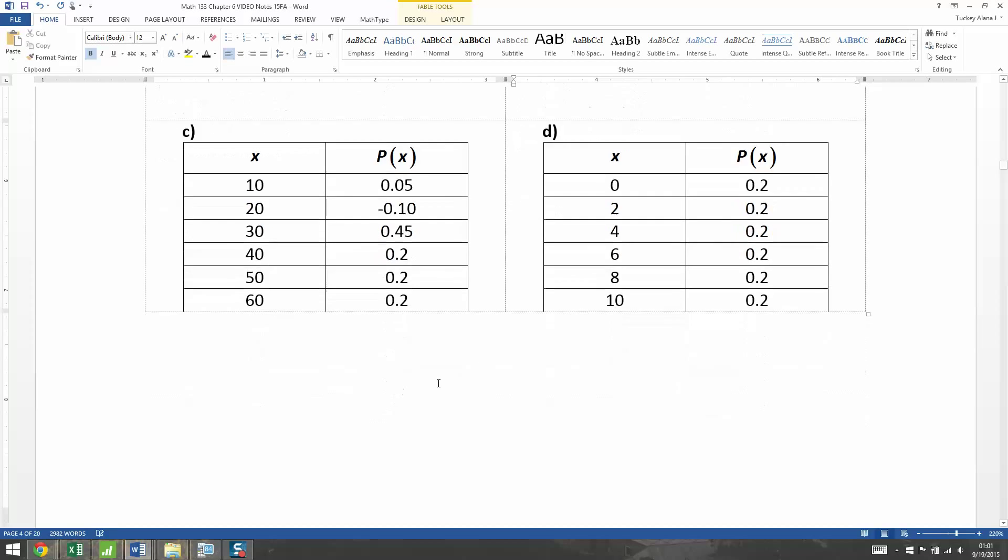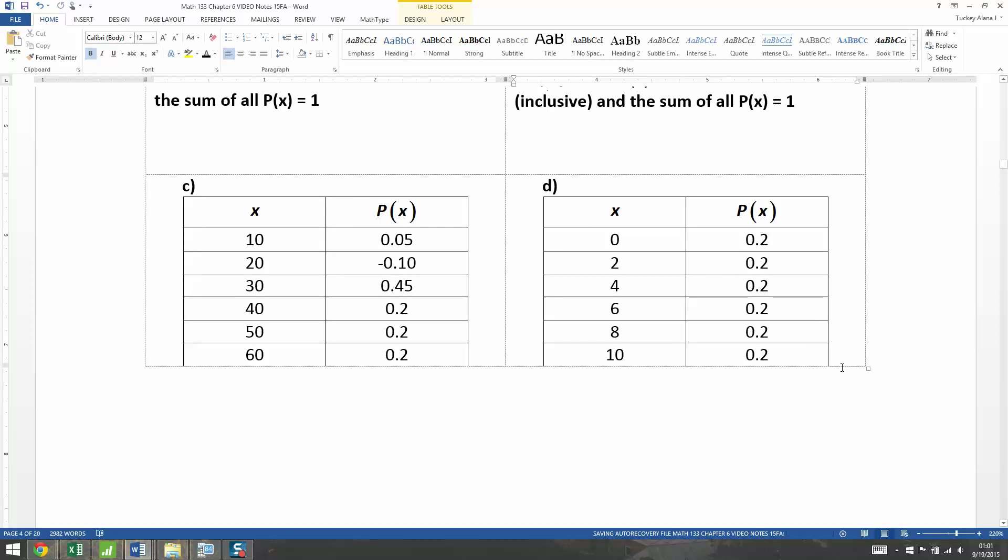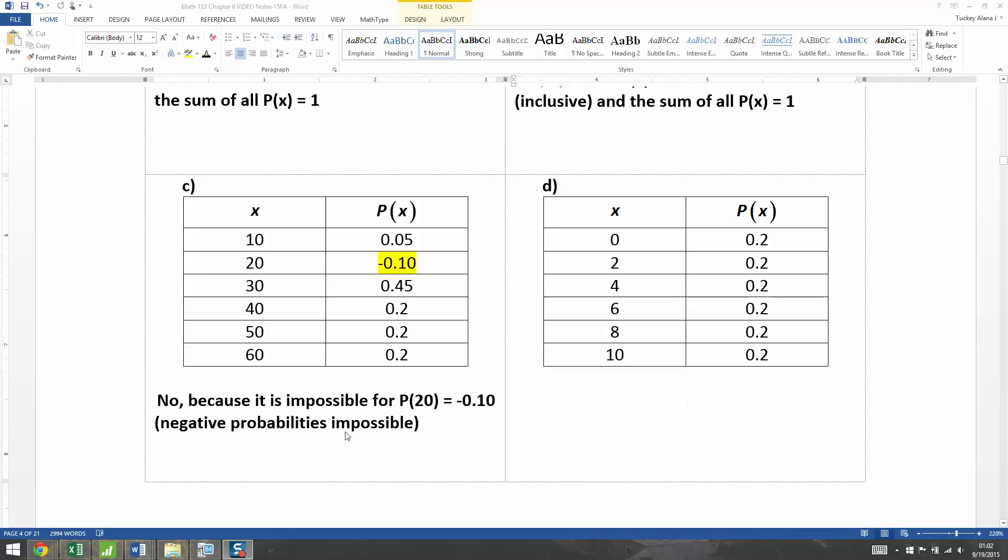Now for letter C, the answer's going to be no. And I can see it from here. And the problem is this guy right there, negative 0.10. That violates the second rule. You can't have a probability that's negative like that. And that's what I just typed up right here. So it is impossible for the probability of 20 to be negative 0.10. Negative probabilities are not possible. Or how about this, not valid.